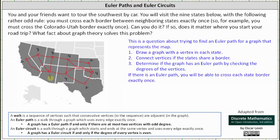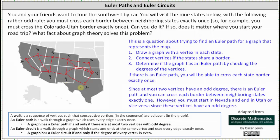Recall that a graph has an Euler path if and only if there are at most two vertices with odd degree. Notice we have exactly two vertices with odd degree. The remaining vertices have an even degree, and therefore the graph does have an Euler path. Since at most two vertices have an odd degree, there is an Euler path and you can cross each border between neighboring states exactly once.